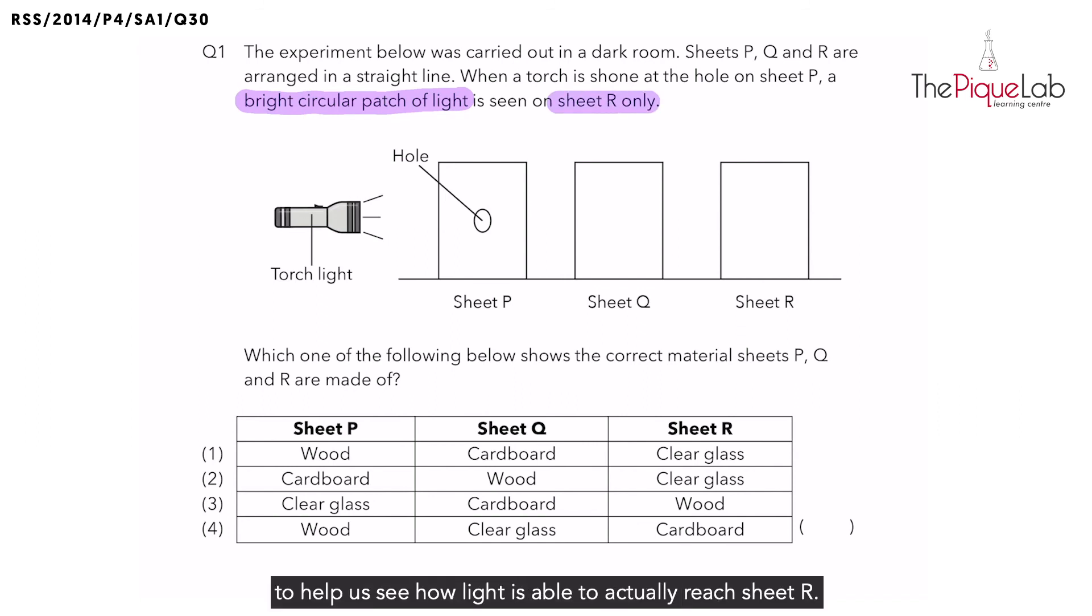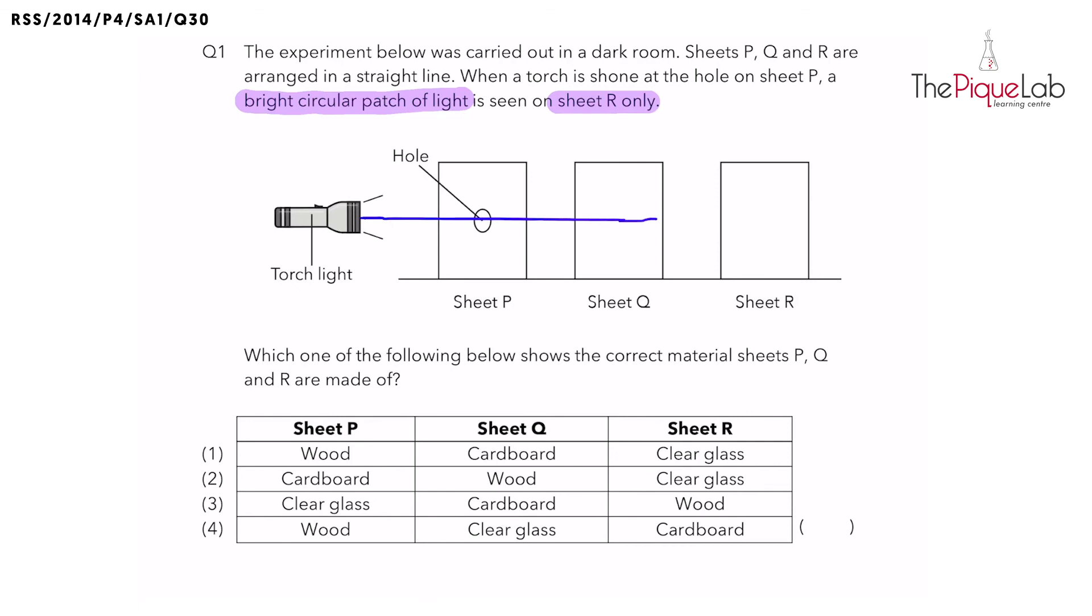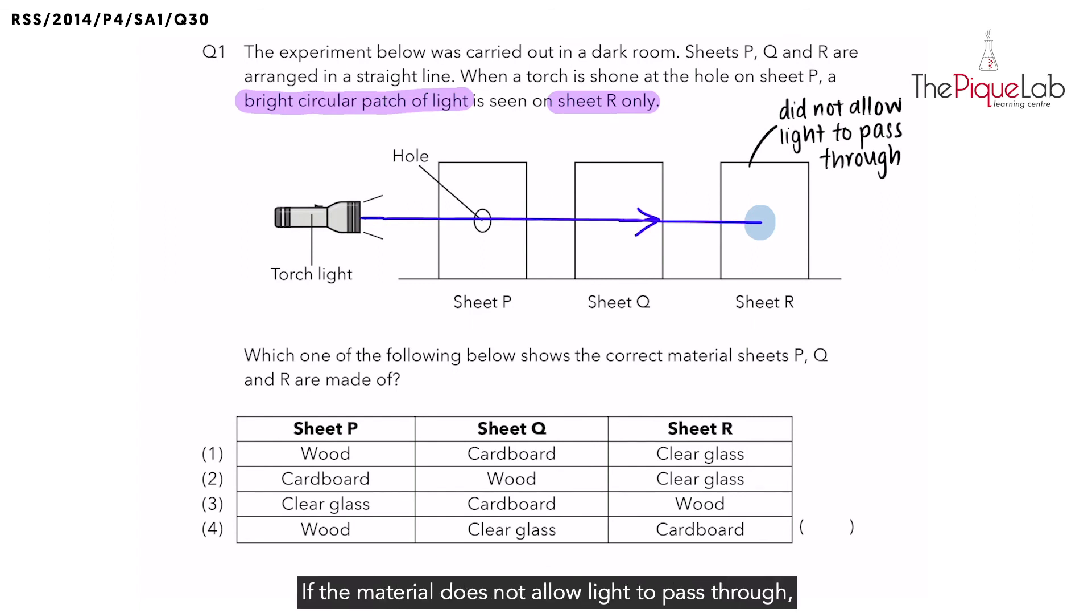Let us draw the light ray to help us see how light is able to actually reach sheet R. Light from the light source must have traveled in a straight line to pass through the hole in P, to pass through sheet Q, and finally to reach sheet R. We notice that for sheet R, what we will see is a bright circular patch of light. We notice that no light was able to pass through sheet R because we are able to see the patch of light reflected off R. Sheet R did not allow light to pass through. If the material does not allow light to pass through, we say that it is an opaque object.